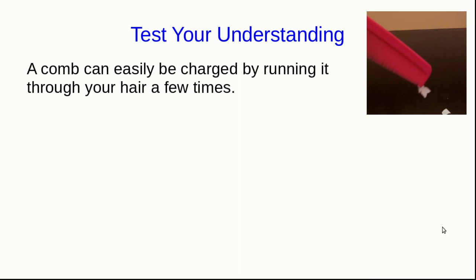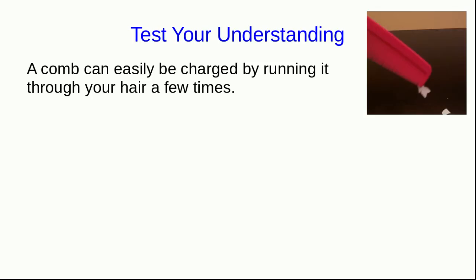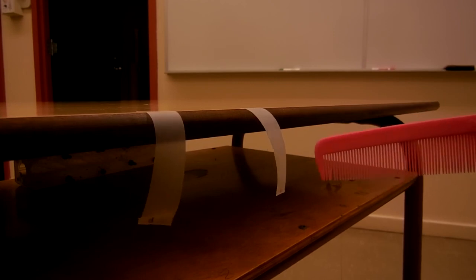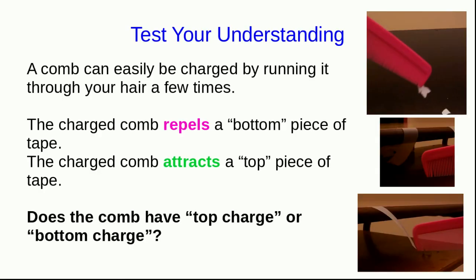Well, let's check whether you're understanding things. You can try this out at home if you've been doing the experiments with the tape so far. You can easily charge a comb by running it through your hair a few times. And once you've charged it, you can verify that it's charged because it'll pick up little bits of paper. And if you've made a top and bottom piece of tape, then you will find that the comb will repel the bottom piece of tape and it'll attract the top piece of tape. So the question is, does the comb have top charge or bottom charge? If you're in this course and doing this through Moodle, Moodle will now ask you this question before allowing you to go on to the next half of the video. If you're not in my course, I would encourage you to come up with an answer anyway before you click on to the next video.